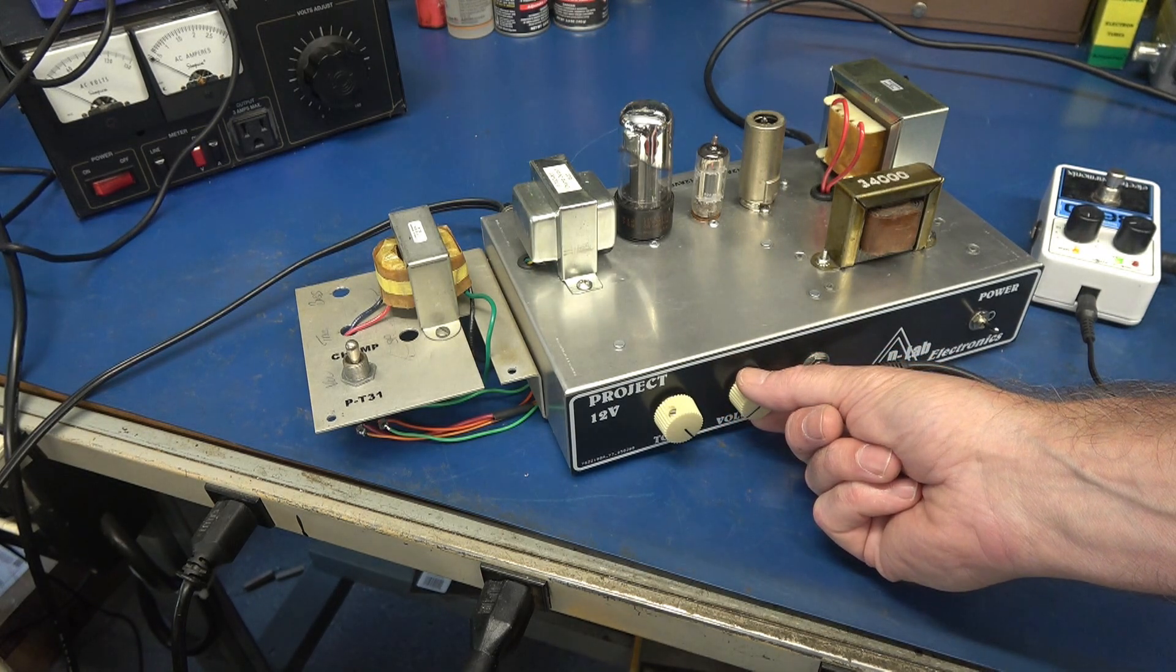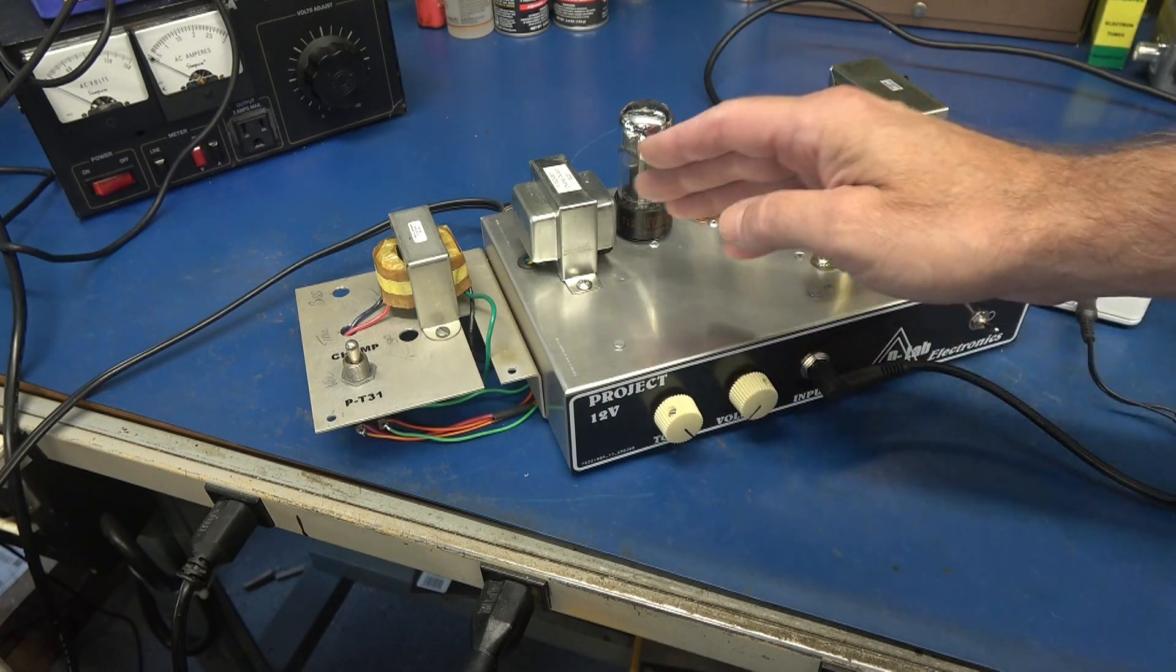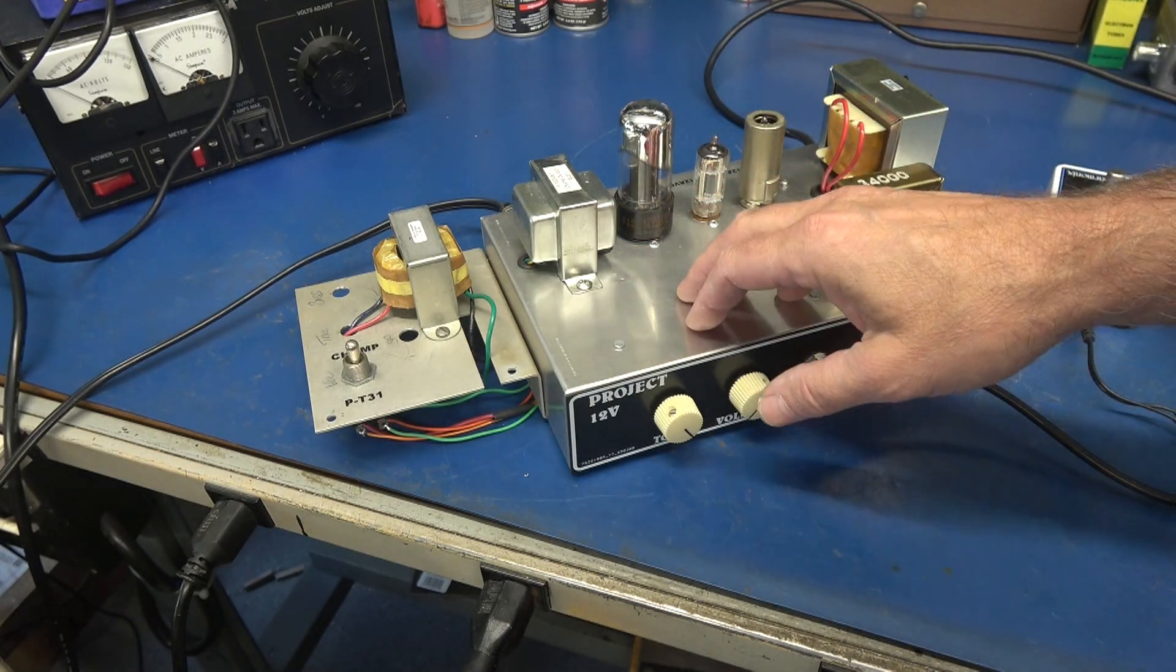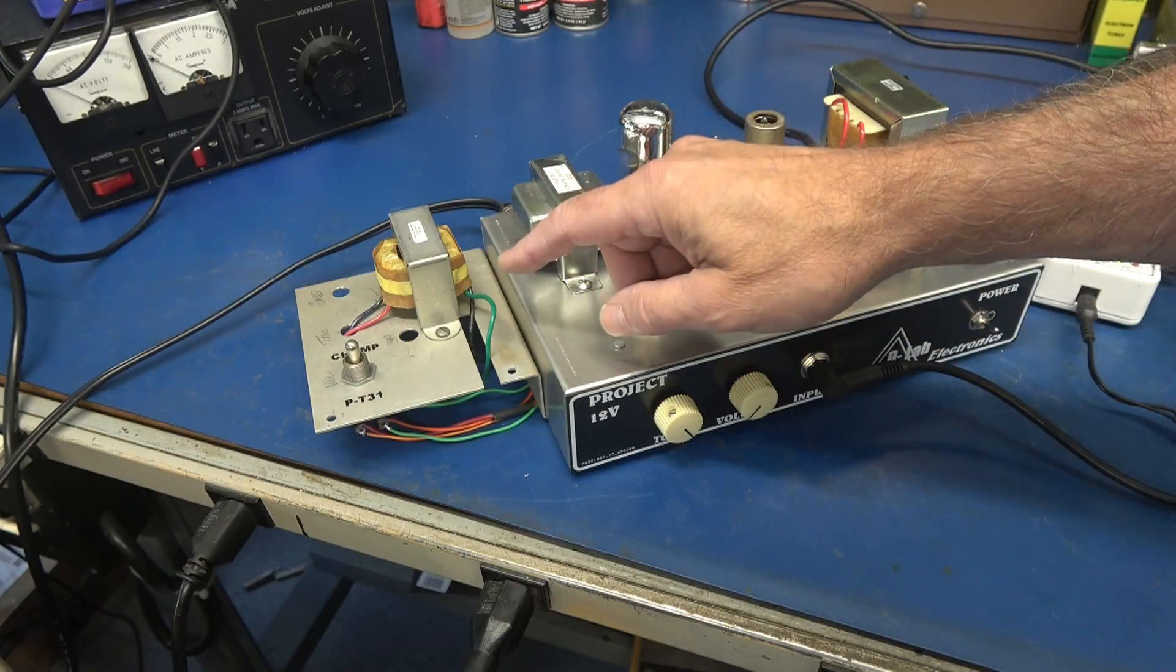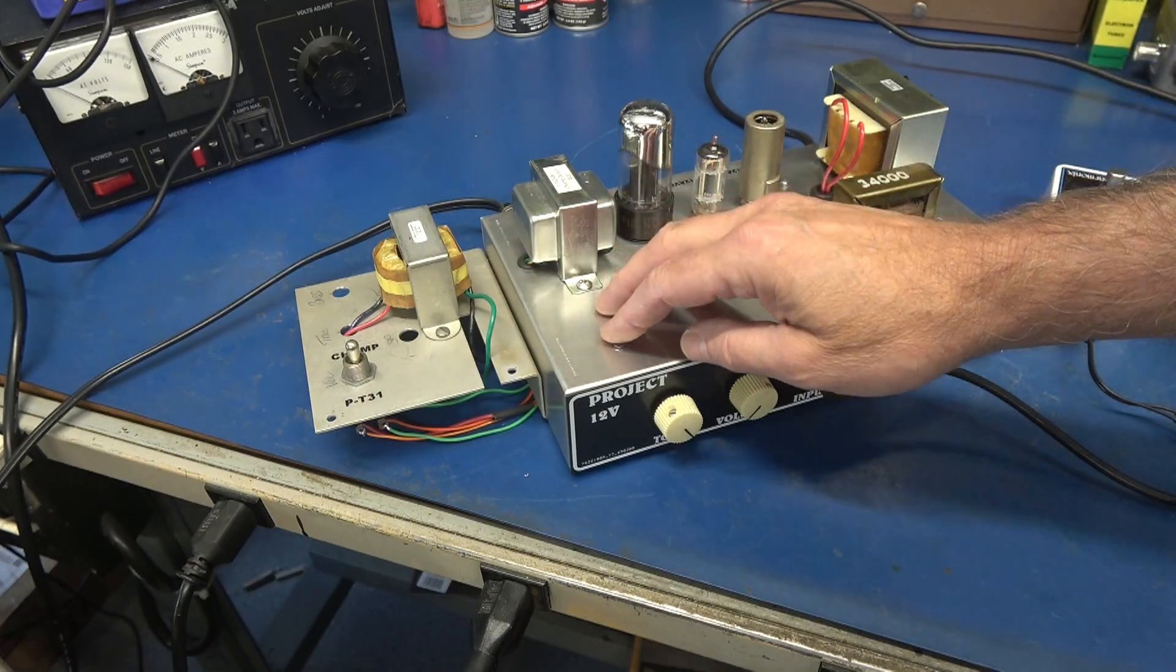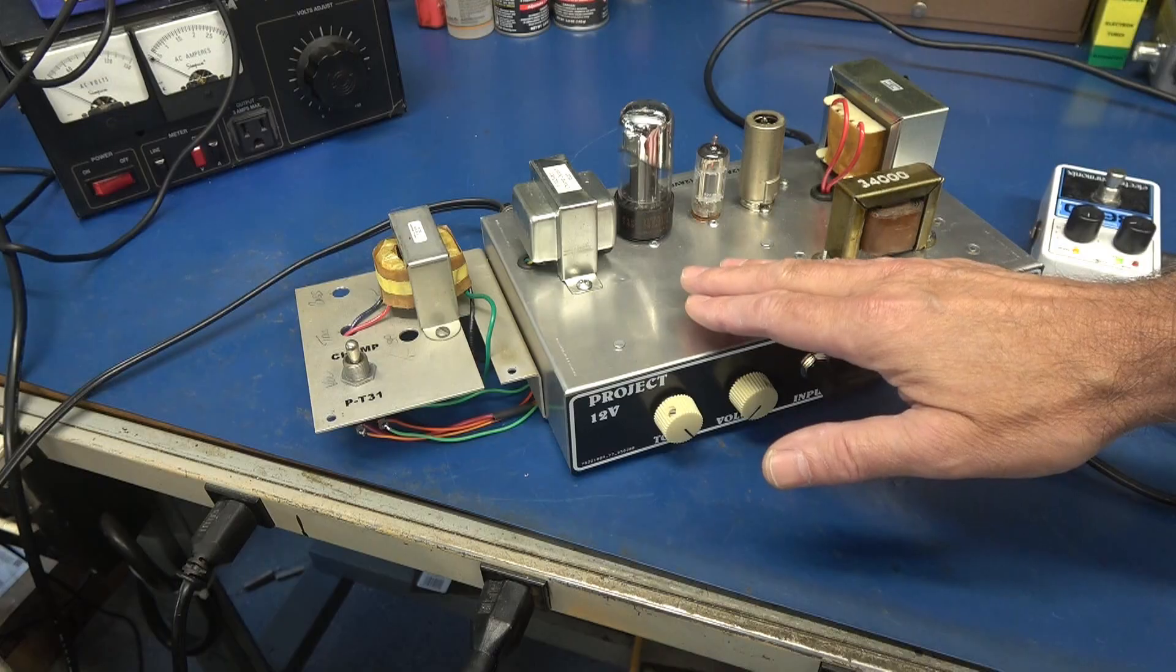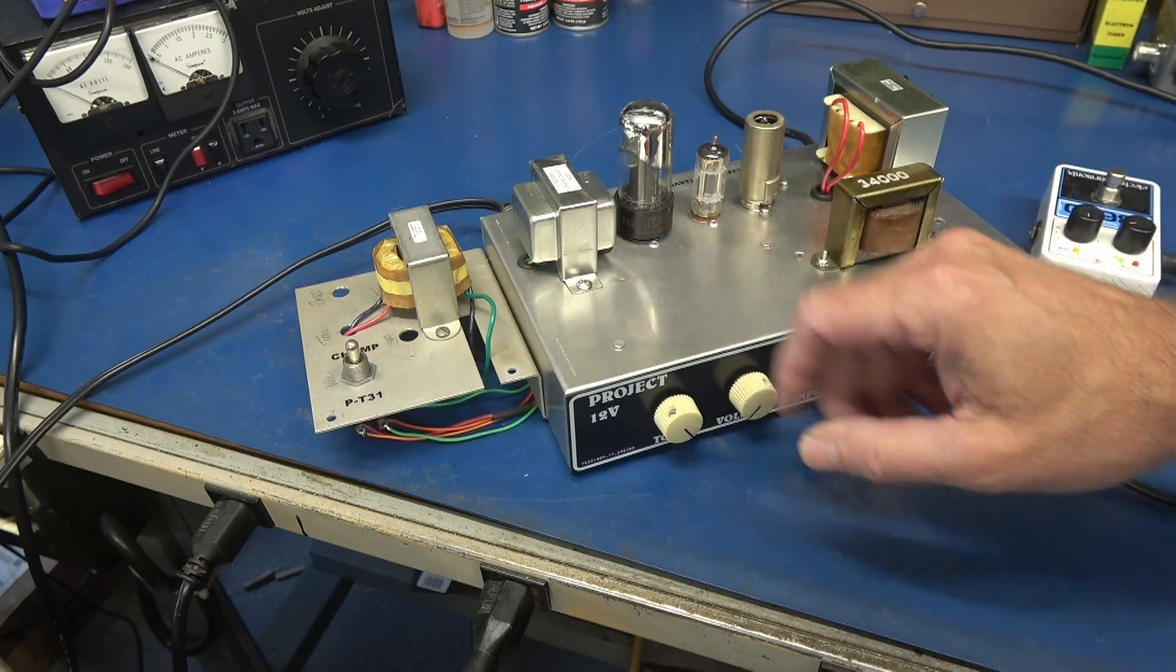So what I noticed was the CHAMP transformer had a much brighter tone, a little more punchy. And then when we went to the P-T31, it got a little fuller, but I did not notice any big effects on the overall tone performance.